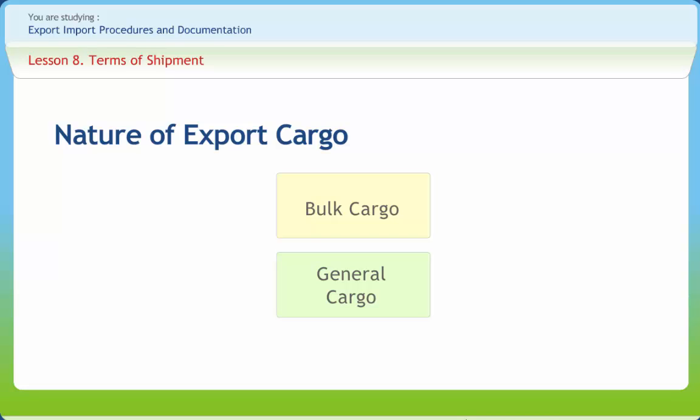General cargo comprises manufactured, semi-manufactured, processed, and semi-processed goods and materials moving in small quantities in cases, packages, parcels, bales, etc. Examples of such cargo are engineering goods, leather products, textiles, drugs and pharmaceuticals, tobacco, spices, and marine products.